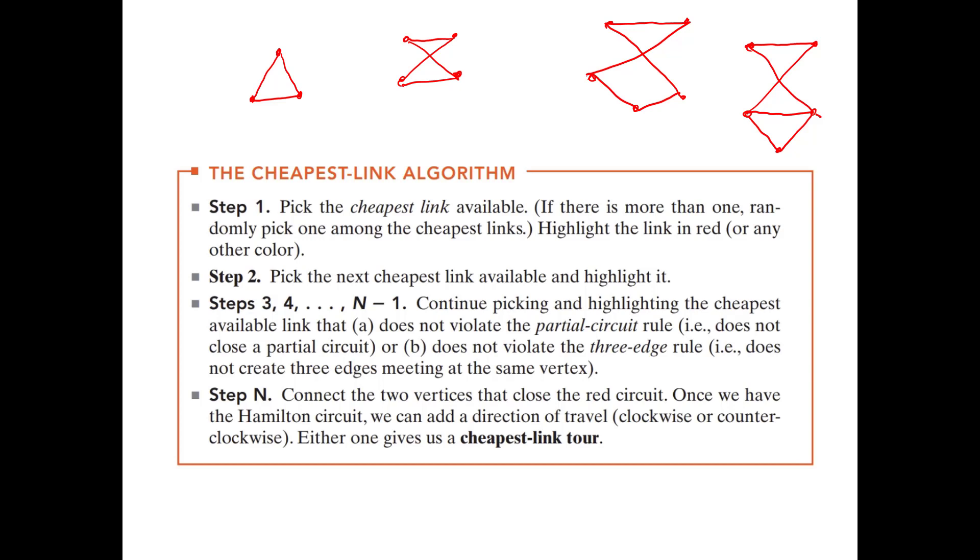Okay, so step two is also very simple. Pick the next cheapest link available and highlight it. Now there's no problem in step one or step two. The problems arise at step three. Because once you have three links, it is possible for you to make a circuit. And you can't have a circuit, a smaller circuit, inside your Hamilton circuit. It won't be a Hamilton circuit, right?